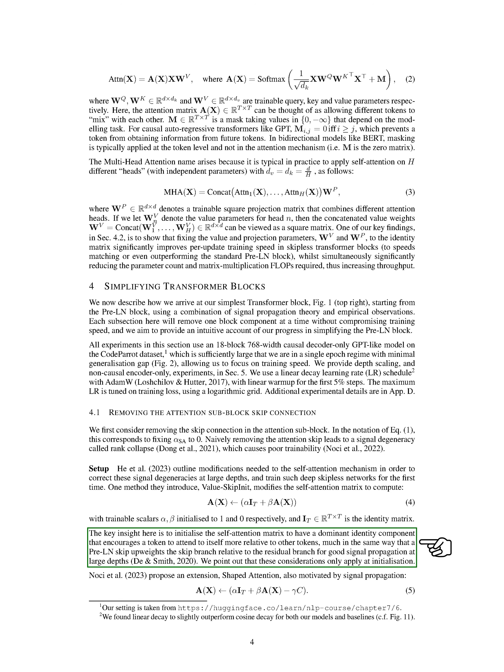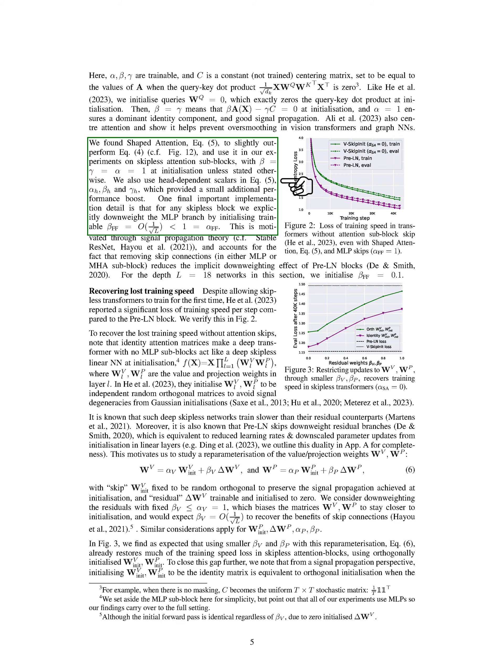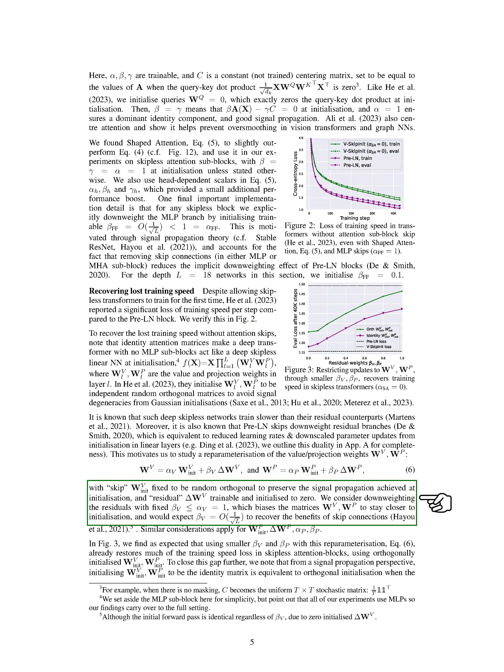We also used an extension called ShapedAttention, which is also motivated by signal propagation. This method involves using trainable parameters and a constant centering matrix. We found that ShapedAttention slightly outperformed ValueSkipInit, and we used it in our experiments on skipless attention sub-blocks. For any skipless block, we explicitly downweight the MLP branch, based on signal propagation theory, to account for the fact that removing skip connections reduces the implicit downweighting effect of pre-LN blocks. Despite these modifications, we noticed a significant loss of training speed per step compared to the pre-LN block.